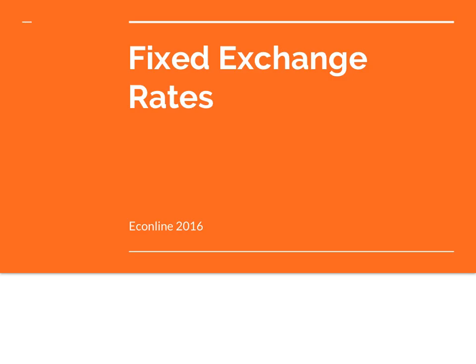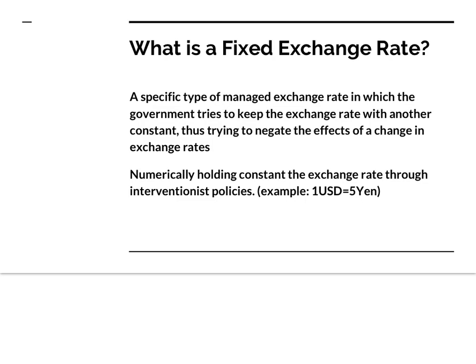This video is going to be about fixed exchange rates. A fixed exchange rate is a specific type of managed exchange rate in which the government tries to keep the exchange rate with another currency constant, thus trying to negate the effects of a change in exchange rates. Numerically, holding constant the exchange rate through interventionist policies. So if the United States wants to keep an exchange rate with Japan at 1 U.S. dollar equals 5 yen, they must manipulate their supply and demand for currencies in order to keep that the same.